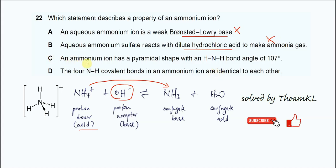For C: An ammonium ion has a pyramidal shape with an H-N-H bond angle of 107°. A trigonal pyramidal with this 107 degree bond angle is for ammonia.